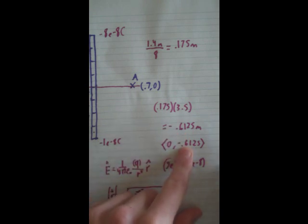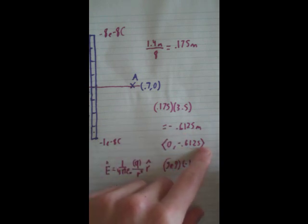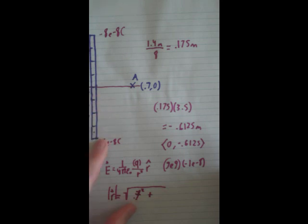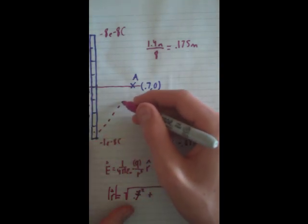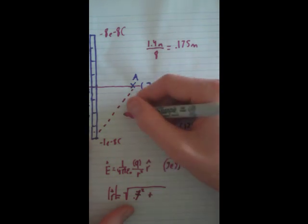plus 0.6125 squared, because that's how far it is this way. Remember, we're trying to find basically this is our r magnitude.